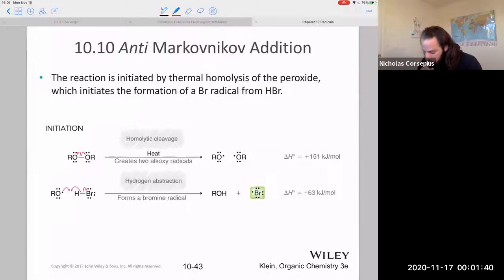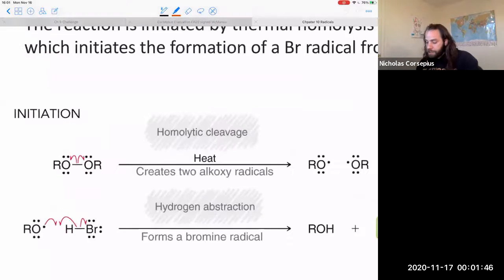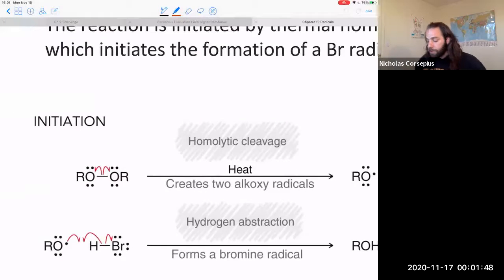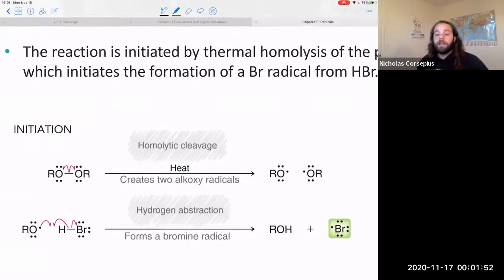So let's take a look, more of a look at that mechanism here. So again, the first step, our initiation step, is going to be to create that radical by homolytically cleaving that peroxide. So that gives us, right?